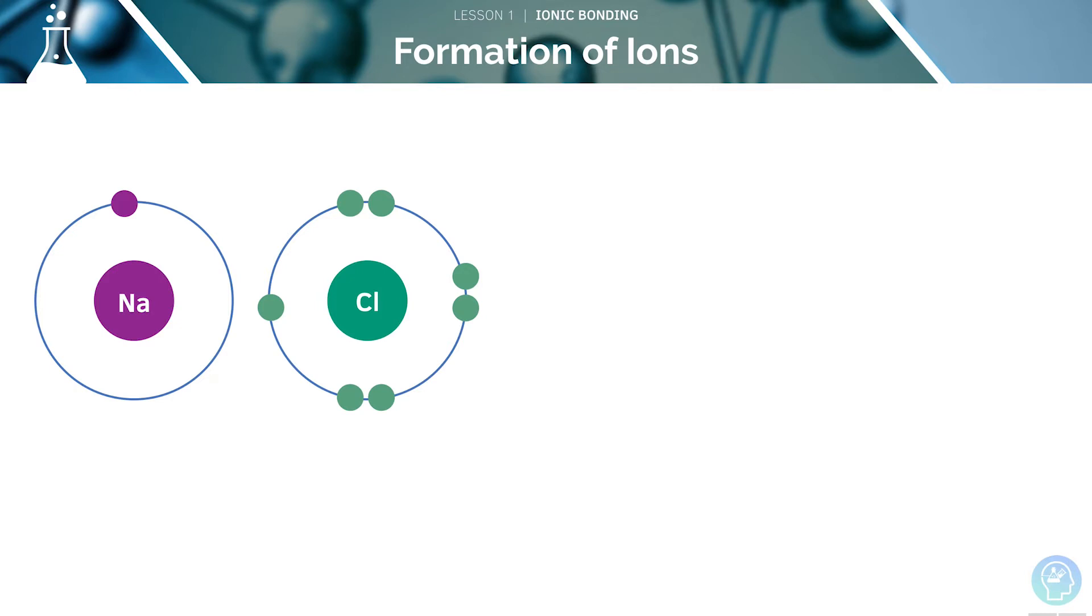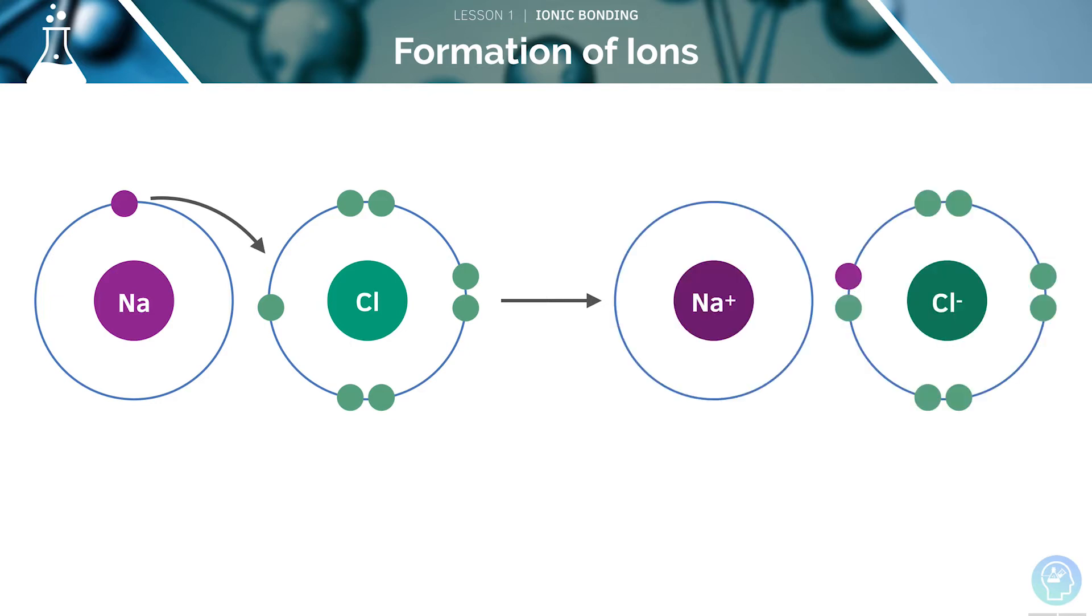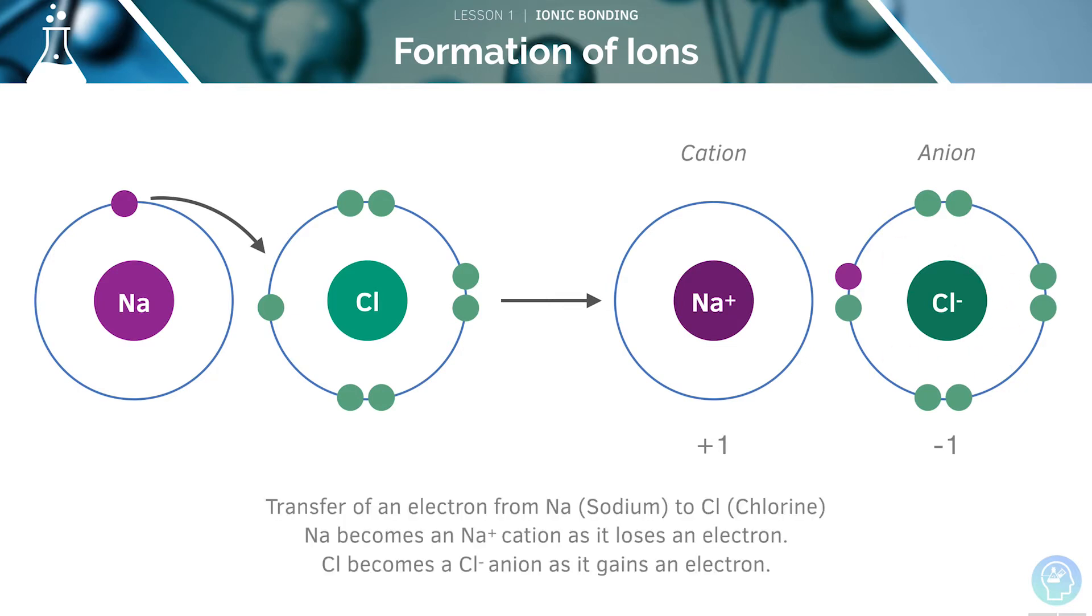Let's look at this example. In the transfer of an electron from sodium to chlorine, sodium is going to lose an electron, whilst the chlorine gains an electron. Therefore, Na is going to become an Na plus cation, and the chlorine is going to become a Cl minus anion. In this diagram, it is important that you remember that the inner shells are not shown here.